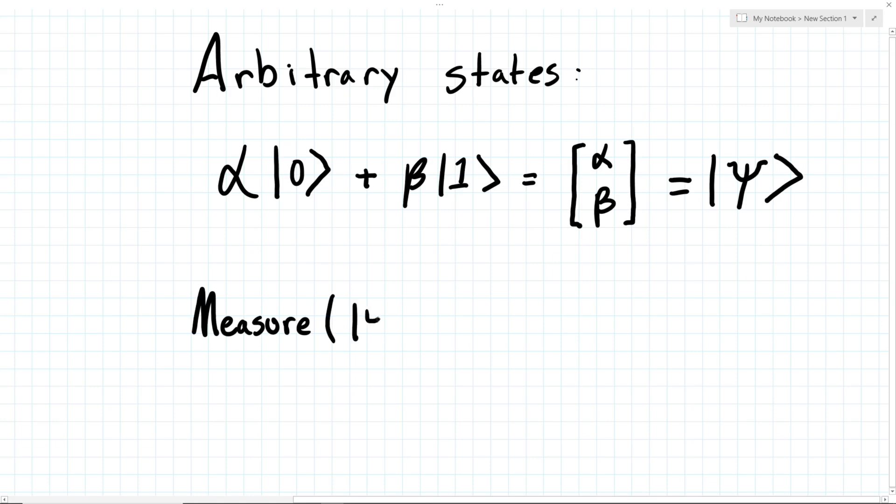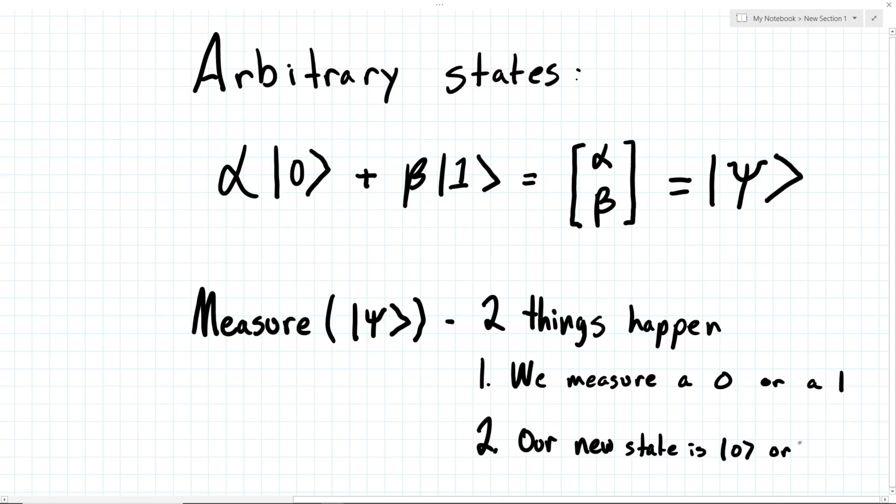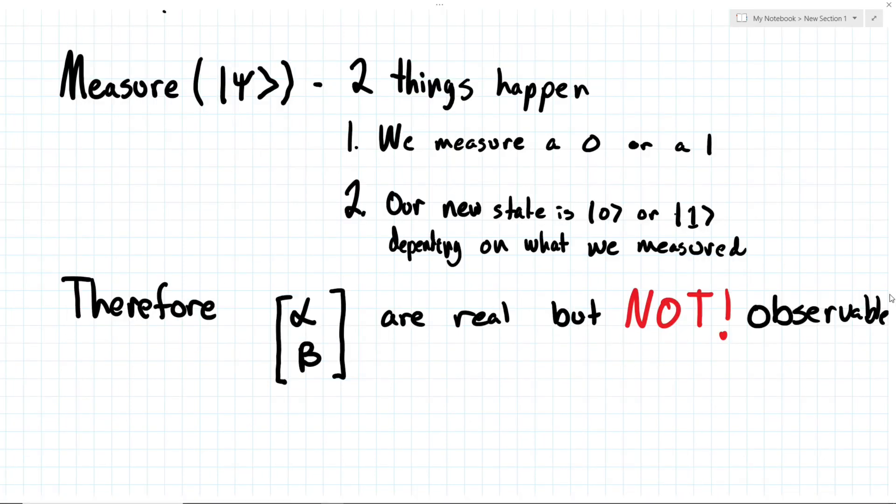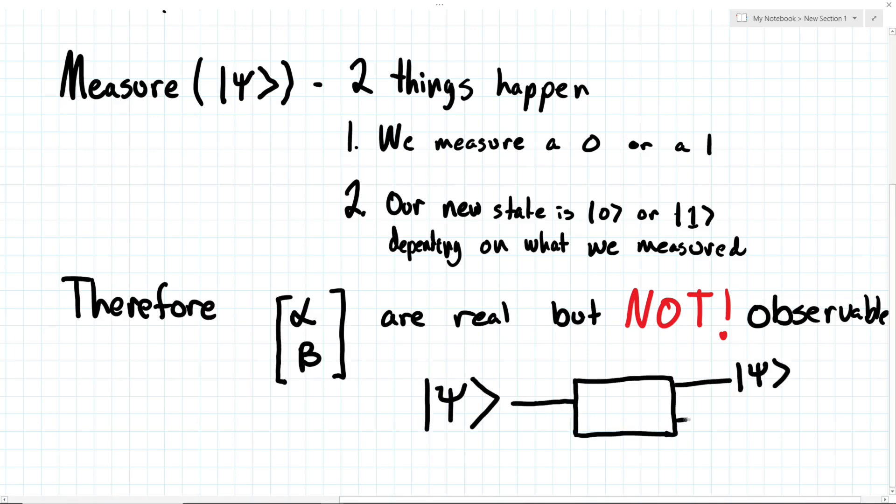When we measure an unknown state, we destroy the state, meaning we get a measurement result and our new state is left in either the 0 or 1 state, making repeated measurement identical. Because of this, we can never actually directly observe the amplitude of the state. Therefore, it is not possible to build something which takes a quantum state and clones it, because it isn't possible to get complete information about the state. This is called the no-cloning theorem, and it is an essential principle of quantum mechanics.